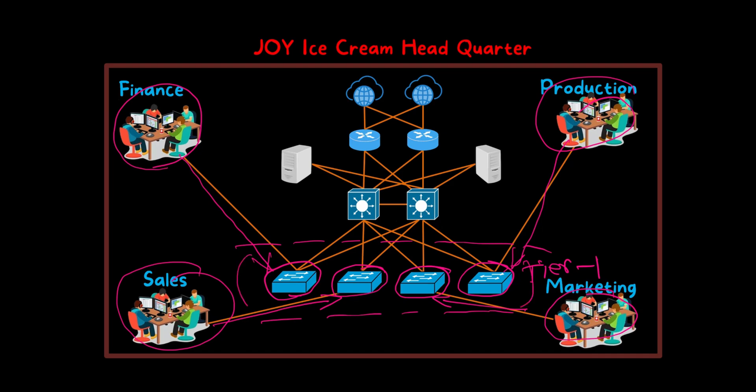Then above the access layer we have two distribution switches at the distribution layer, which is also called tier 2. The main function of the distribution layer is to provide network connectivity to the access layer switches. Distribution switches are also used to connect critical services like servers and network printers. Additionally, distribution switches are used for routing, quality of service, and access control — for example, if we want to allow or deny a specific type of traffic, we can configure access control at the distribution layer switches.